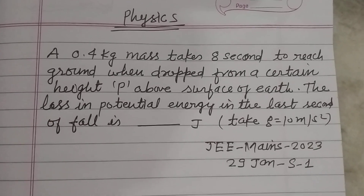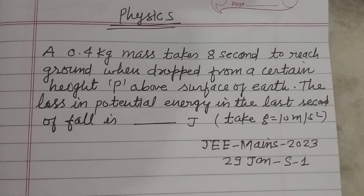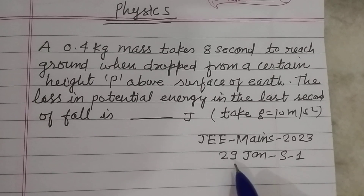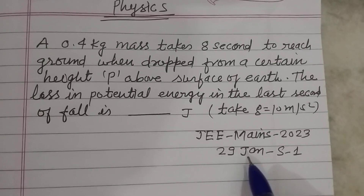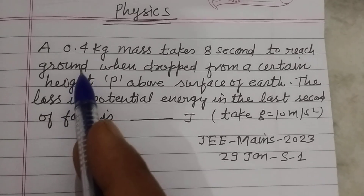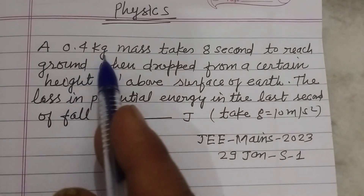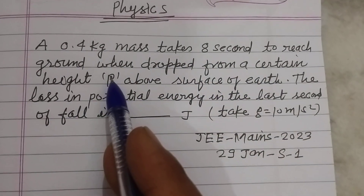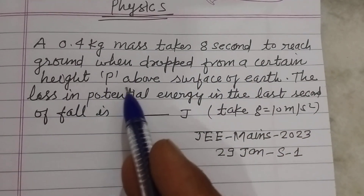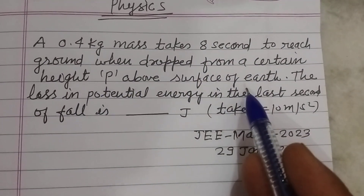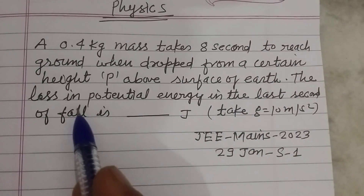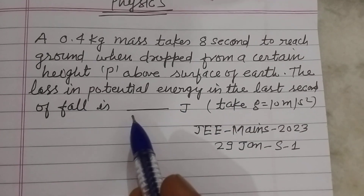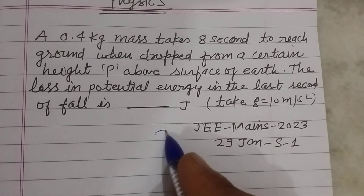Hello students and welcome to this YouTube channel. Question from Jemins 2023, 29th January. A 0.4 kg mass takes 8 seconds to reach the ground when dropped from a certain height P above the surface of earth. The loss in potential energy in the last second of fall is — so students,